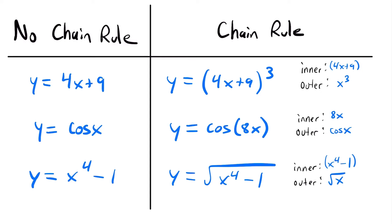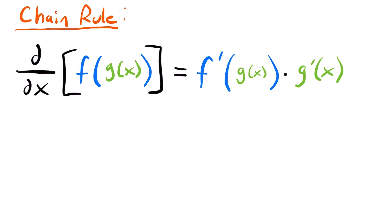Now let's look at what the chain rule actually is. The chain rule says that if we want to take the derivative of a composite function f of g of x — where f of x is the outer function and g of x is the inner function — it equals the derivative of the outer function f prime evaluated at g of x, multiplied by the derivative of the inner function g prime of x. We can think of it as: derivative of the outside times derivative of the inside.